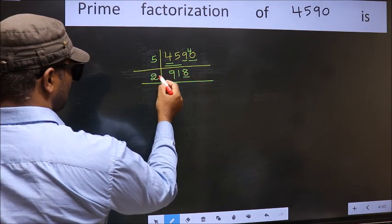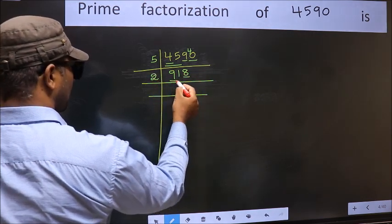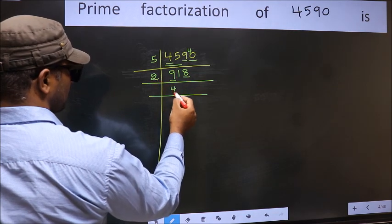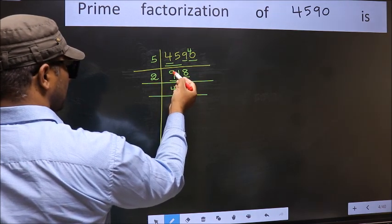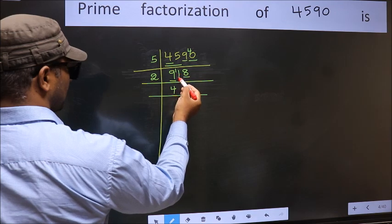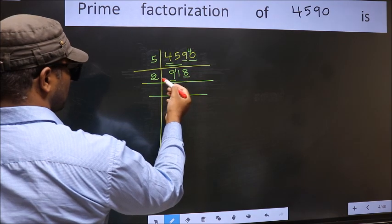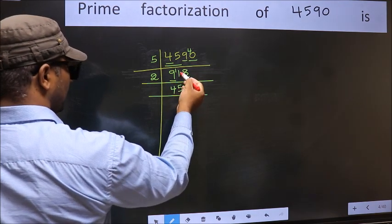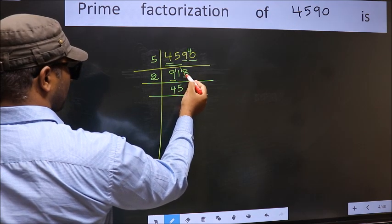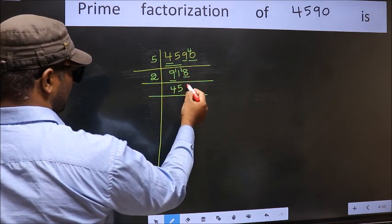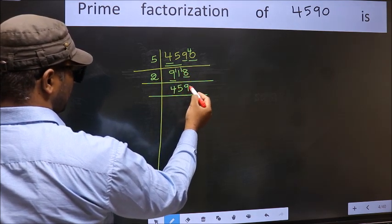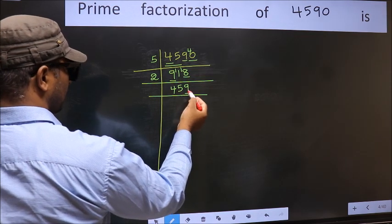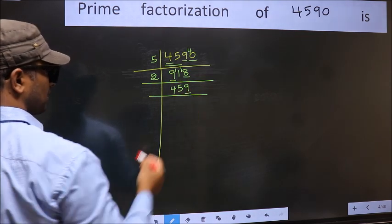Now the last digit is 8, even, so take 2. First number 9 — a number close to 9 in the 2 table is 2 fours 8. 9 minus 8 is 1, 1 carried forward: 11. A number close to 11 in the 2 table is 2 fives 10. 11 minus 10 is 1, 1 carried forward: 18. When do we get 18 in the 2 table? 2 nines 18. Now the last digit is 9, not even, so not divisible by 2.